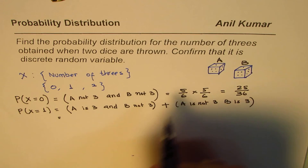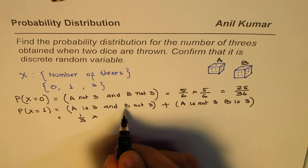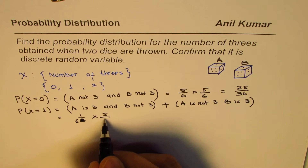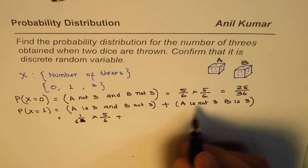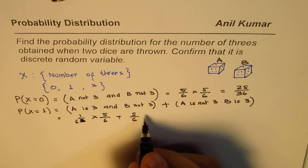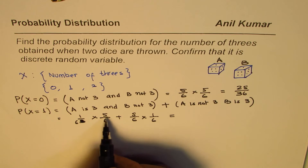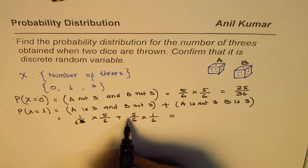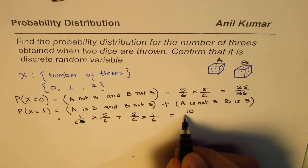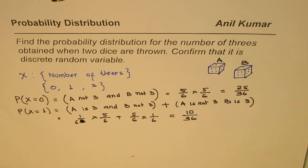A is three has probability 1/6, and B is not three has probability 5/6, giving 5/36. Plus, A is not three (5/6) and B is three (1/6), giving another 5/36. Adding them: 5/36 + 5/36 = 10/36.